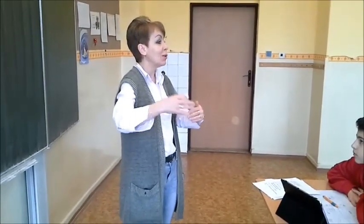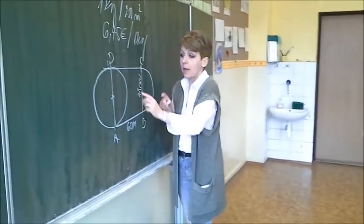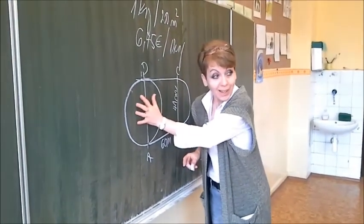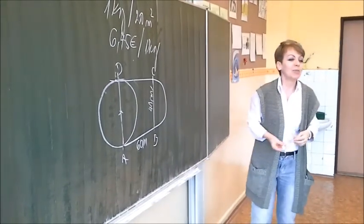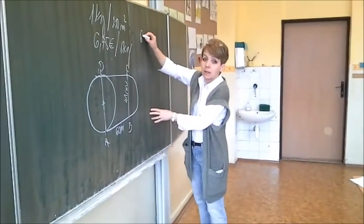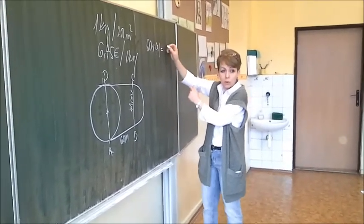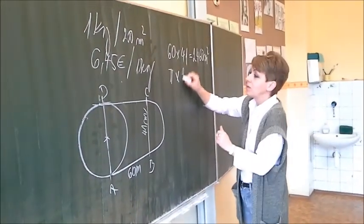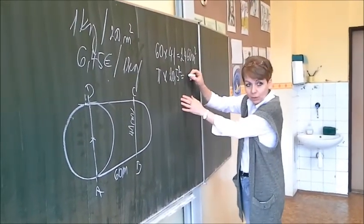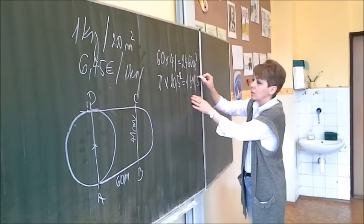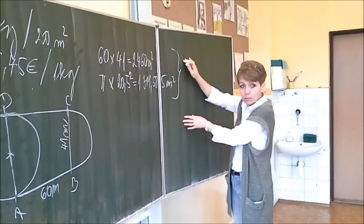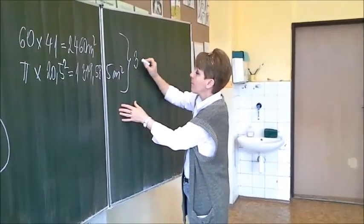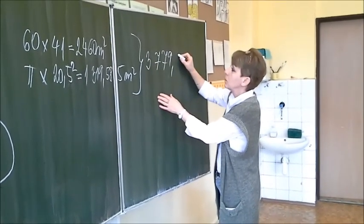Area equals area of rectangle plus area of two semicircles — which together make one full circle. Area of rectangle: 60 × 41 = 2460 square meters. Area of the circle: π × 20.5² = 1319.585 square meters. Total area: 3779.585 square meters.